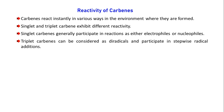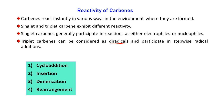If it is triplet carbene, then it behaves as a diradical because there are two electrons and their spin directions are towards the same side. Triplet carbenes participate in stepwise radical addition — first one electron will take part in the reaction and then the next electron. We have a total of four types of reactions possible for carbenes: cycloaddition, insertion, dimerization, and rearrangement.